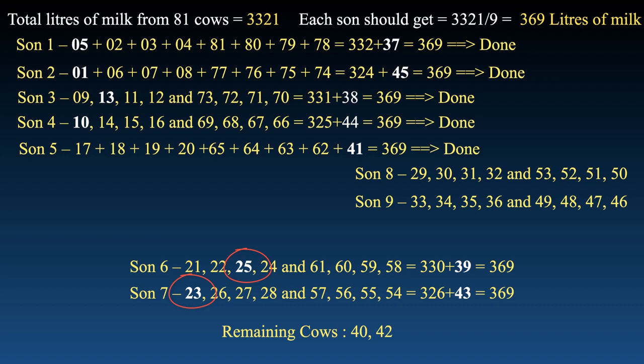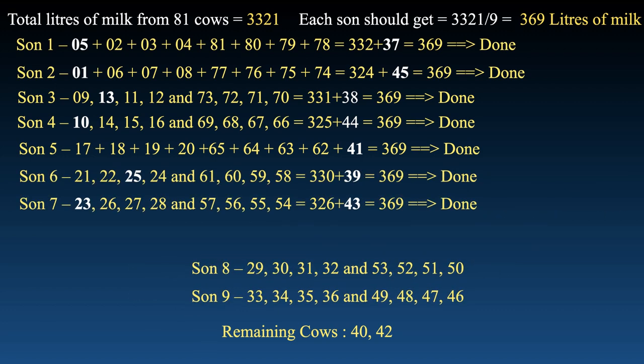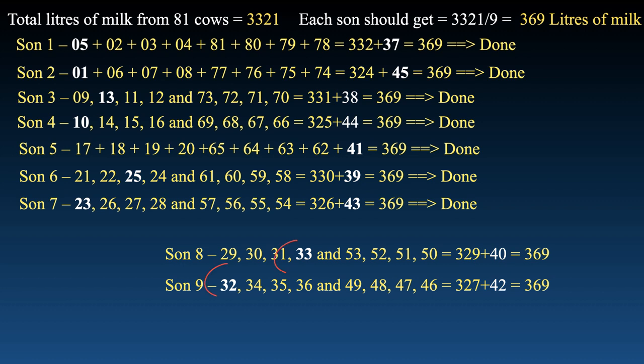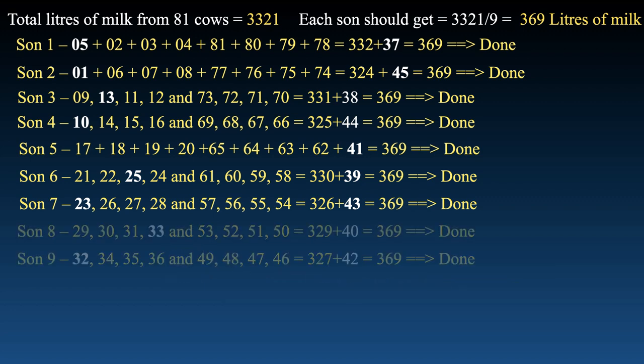For the final pair, sons 8 and 9, only cows 40 and 42 remain — each ±1 away from 41. Give cow 40 to son 8 — he is now one short. Swap a cow with son 9 with a difference of one. Son 8 gains one and equals 369. Son 9 needs to cover the 41 he needed plus the one he lost to son 8. The only option is cow 42. This pair is also sorted.